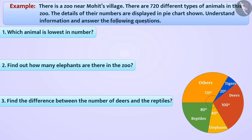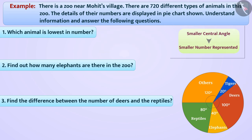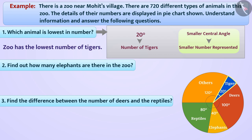Thus, the larger the central angle, the greater is the number represented by it, or the smaller the central angle, the smaller is the number represented by it. Here we see that the smallest central angle is 20 degrees, which represents the number of tigers. We can say that the zoo has the lowest number of tigers.